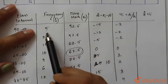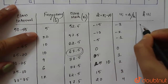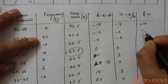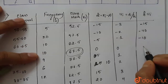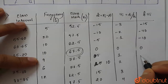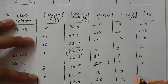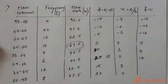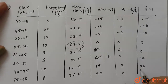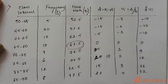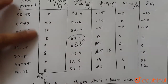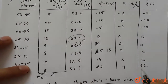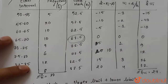Now calculating fi × ui for each row: −15, −40, −10, 0, 9, 12, 36, and 32. The summation of fi equals 80, and the summation of fi × ui equals 24.